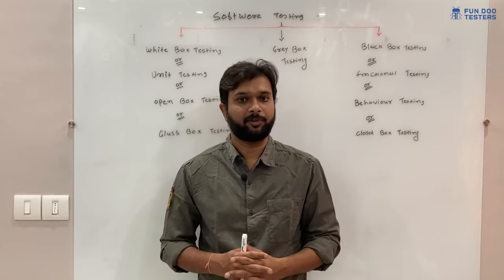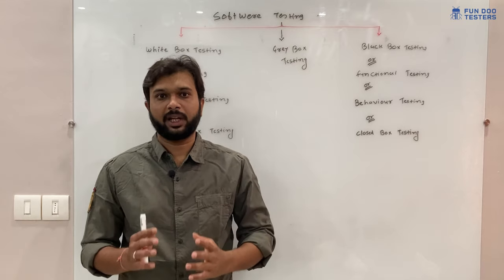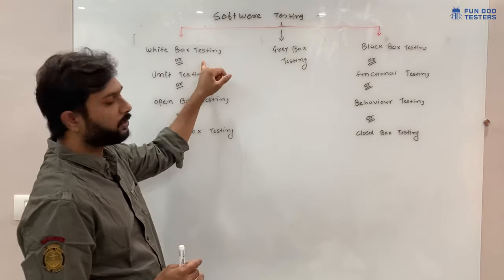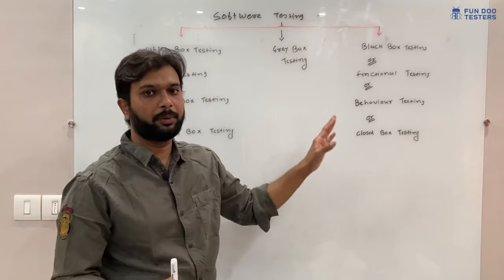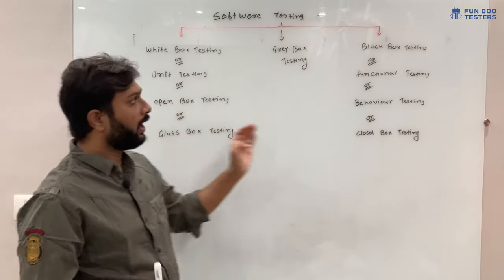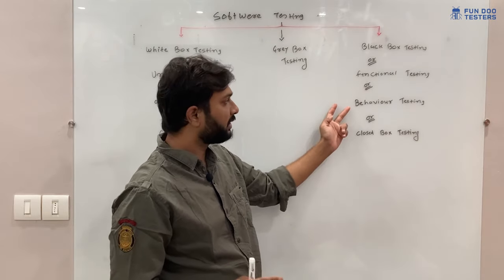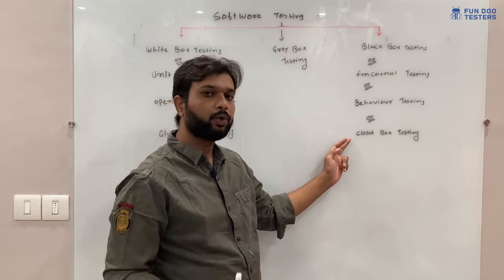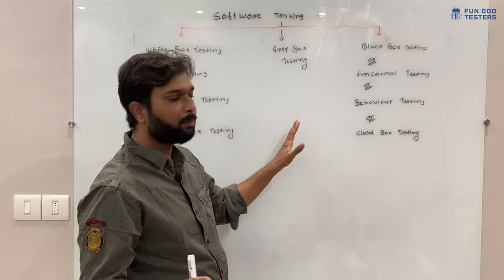First we need to understand there are two types of testing: one is white box testing and another is black box testing. White box testing is also called unit testing or glass box testing. Black box testing can be called functional testing, behavior testing, or closed box testing. Between these two we also have gray box testing.